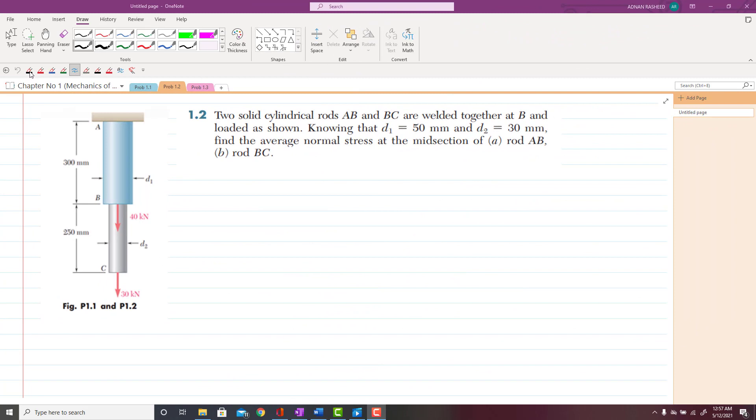Okay, let's start with problem 1.2. The statement of the problem is that two solid cylindrical rods AB and BC are welded together at B and loaded as shown.